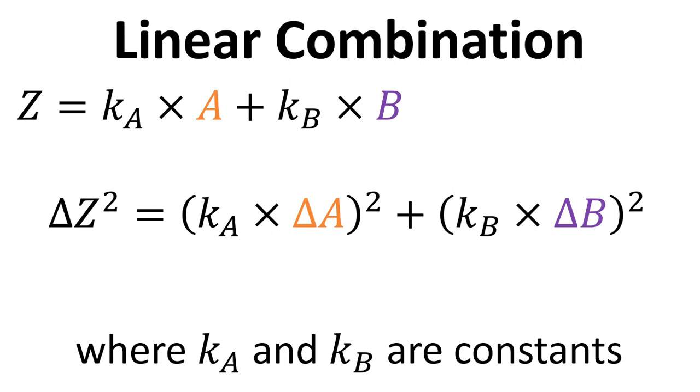And the equation that we need this time is delta Z squared equals K_A times delta A squared plus K_B times delta B squared.